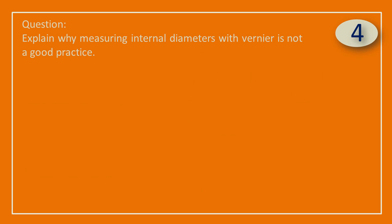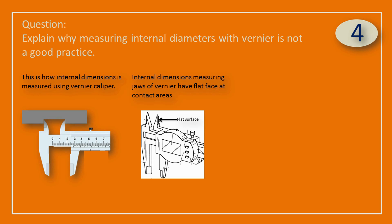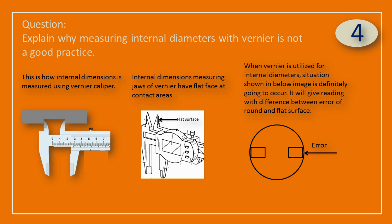Question: Explain why measuring internal diameters with Vernier is not a good practice. Answer: This is how internal dimension is measured using Vernier caliper. The internal dimensions measuring jaws of Vernier have a flat face at contact areas. When Vernier is utilized for internal diameters, the situation shown in the image below is definitely going to occur — it will give a reading with the difference between the error of a round and flat surface.